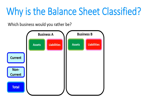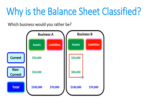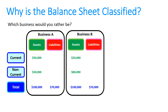The reason we classify things is because it helps us distinguish between businesses when making decisions. If Business A and Business B both have assets of $100,000 and liabilities of $70,000, you can't differentiate between the two. But if we classify — Business A has current assets of $50,000 and non-current of $50,000, versus Business B with current assets of $20,000 and non-current of $80,000 — you'd probably choose Business A because they have more current assets and we'd expect more cash within 12 months.